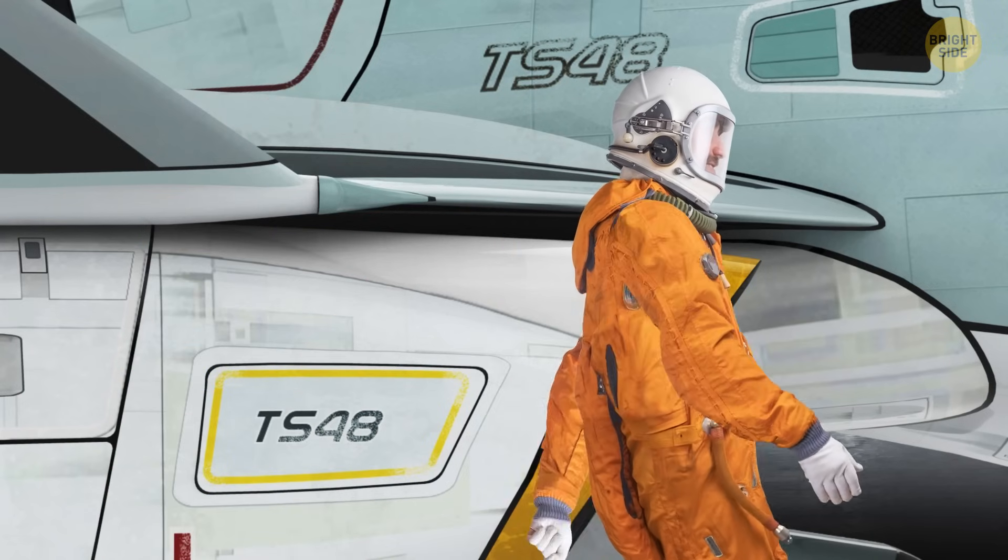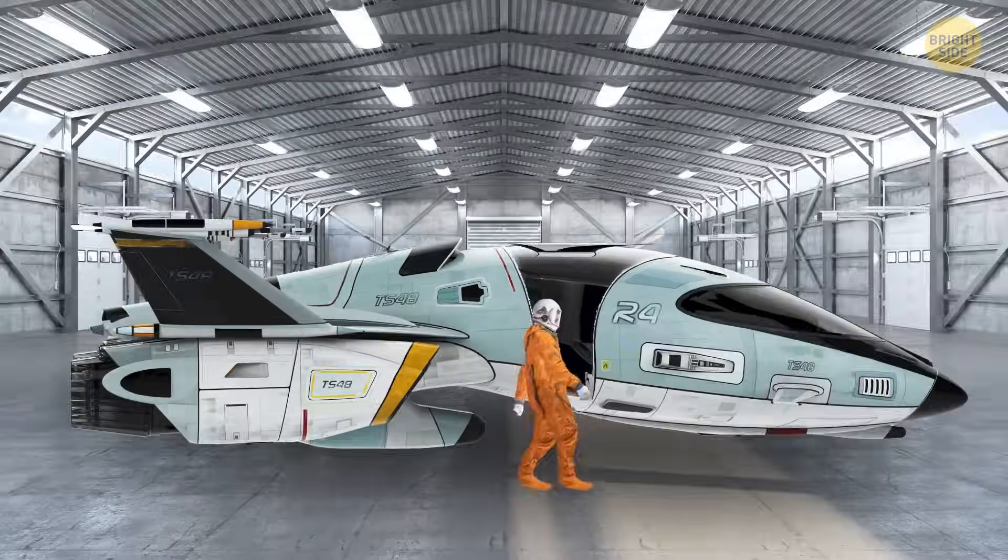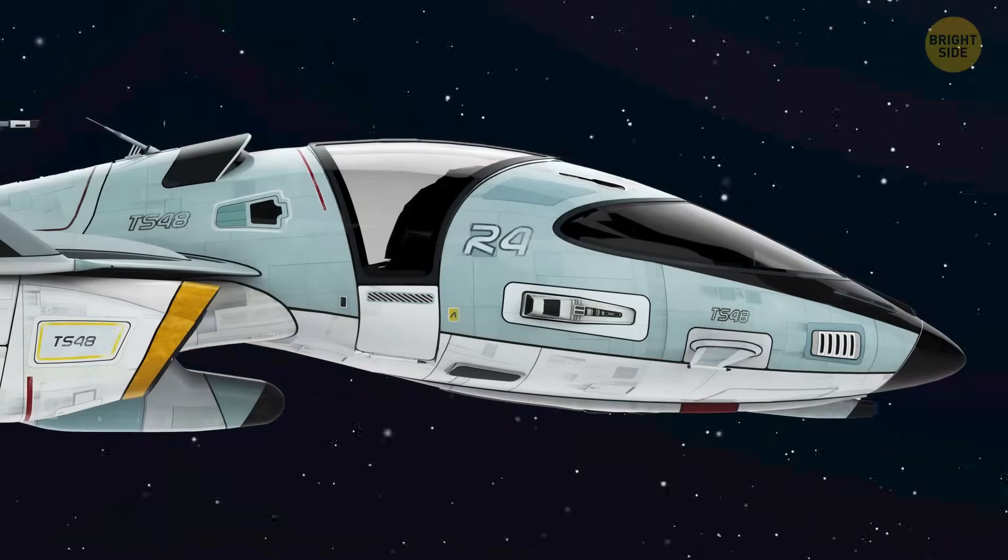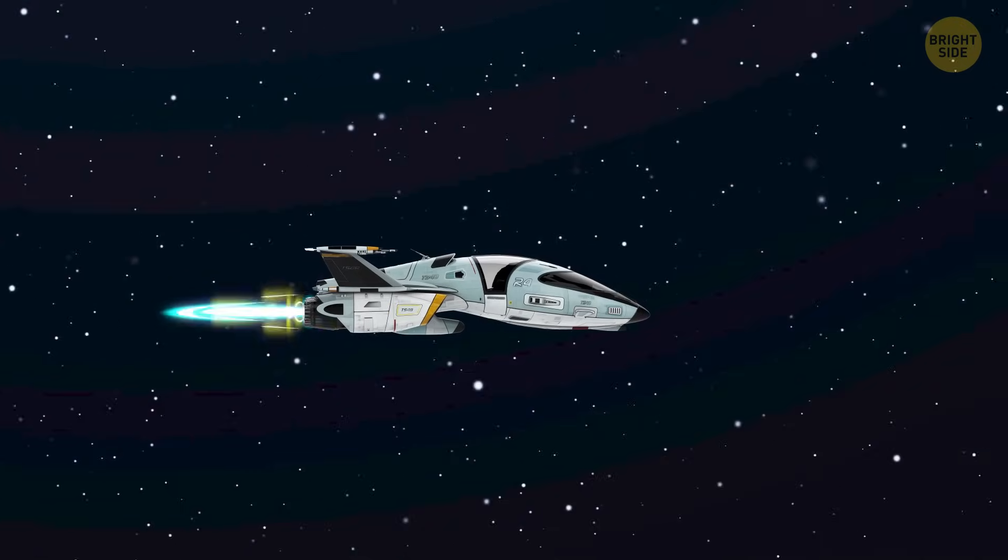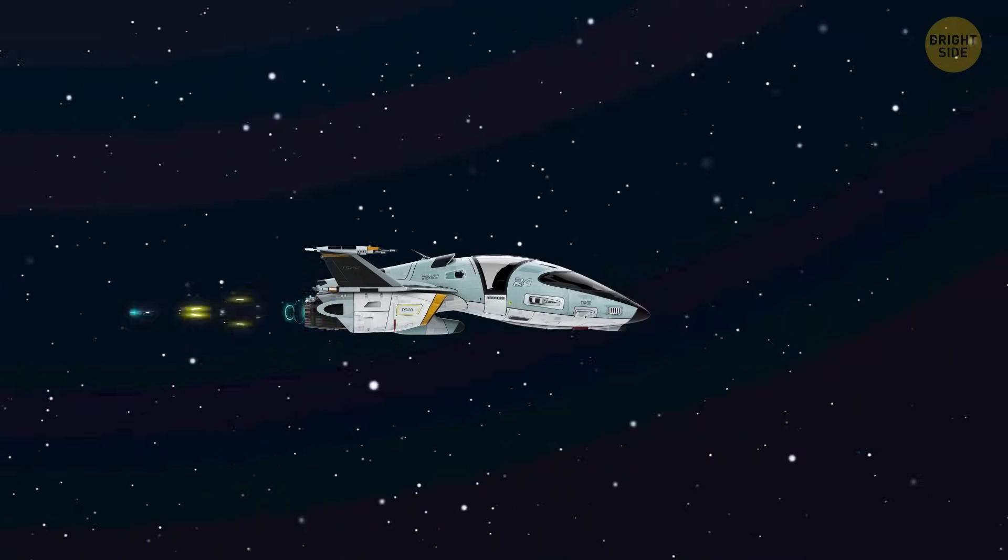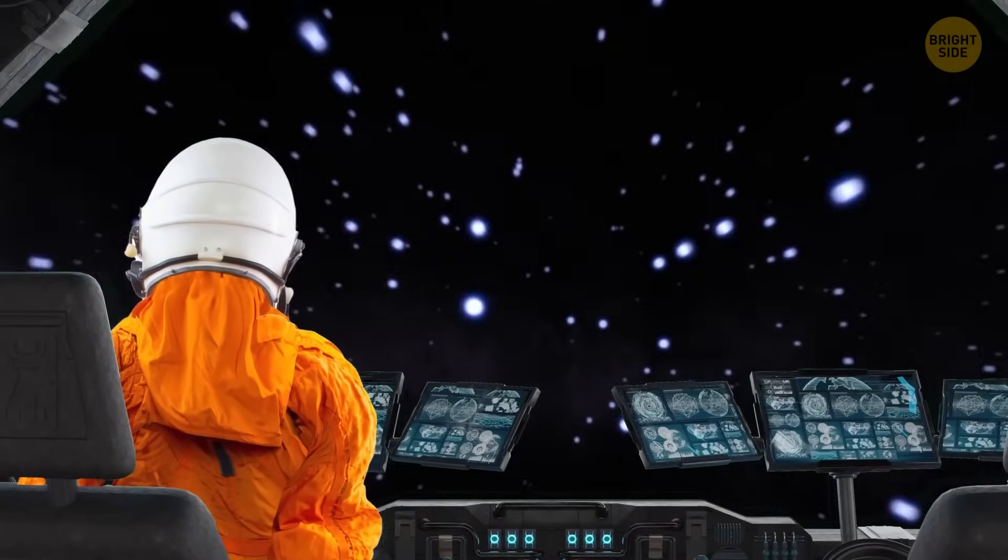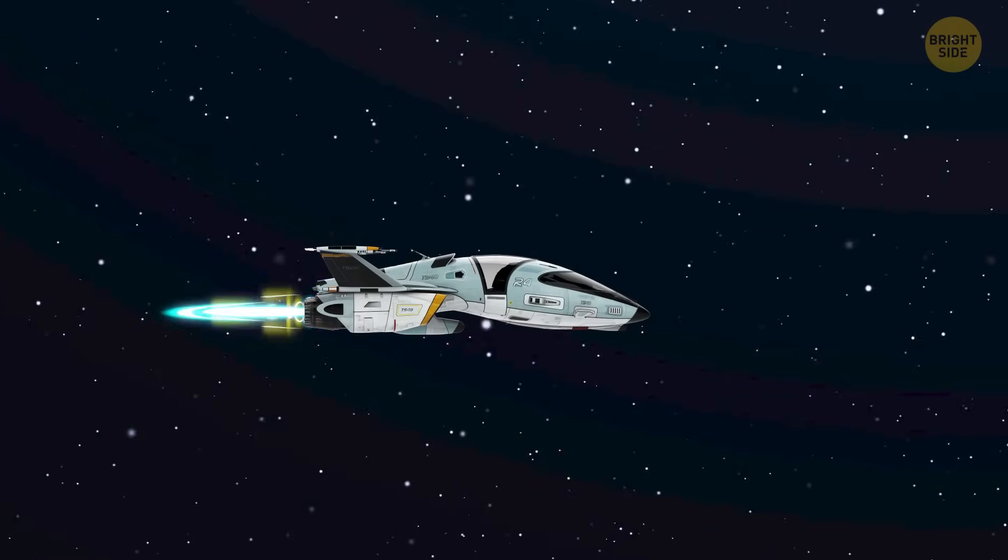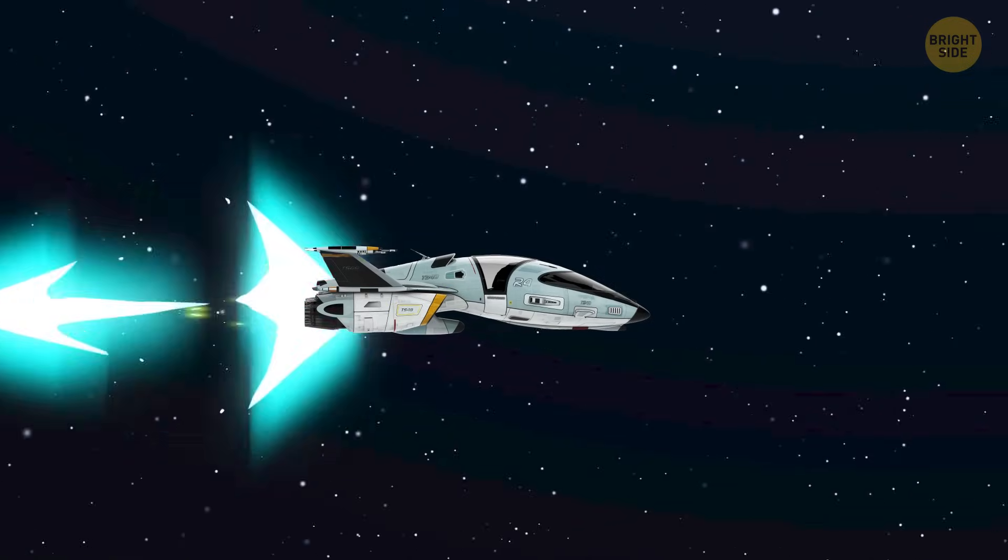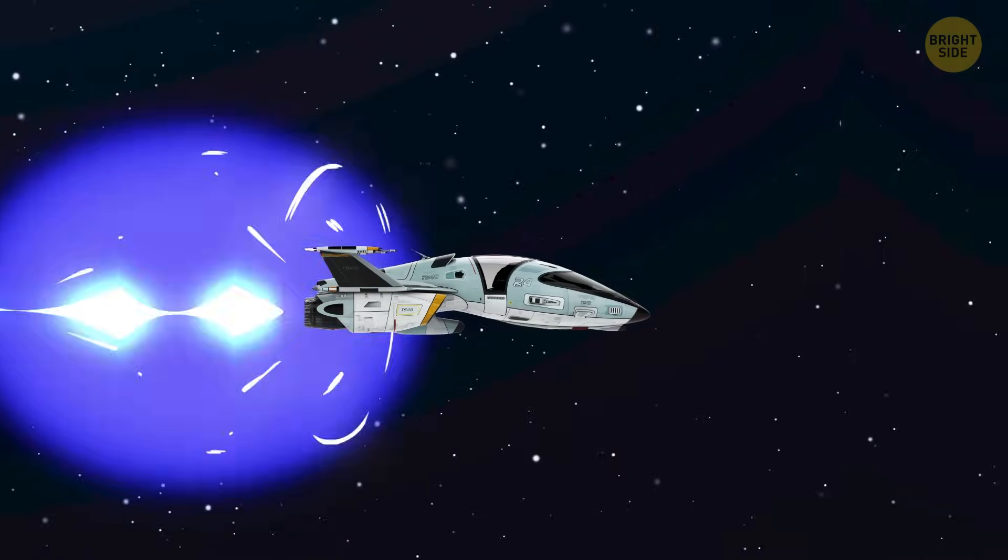You get the last instructions from the team and get into your spaceship. It's the first spacecraft made on Earth that can move at a speed close to the speed of light. Your task is to visit the most unusual and terrifying places in space and send scientists detailed information about them. And so, your journey begins. Your spacecraft is accelerating, and you dash past the moon.